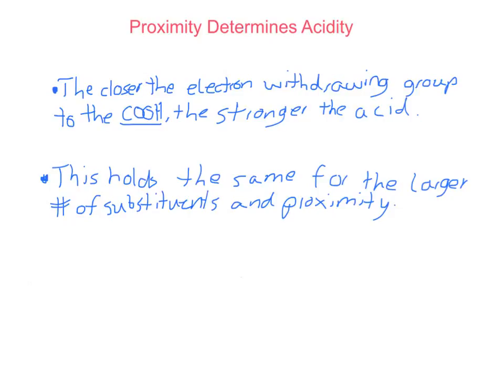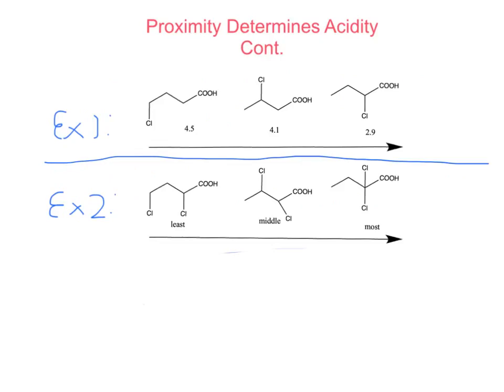When we're talking about the inductive effects in aliphatic carboxylic acids, another aspect that helps determine this is the proximity of the electron withdrawing group to the carboxylic acid. The closer the electron withdrawing group to the carboxylic acid, the stronger the acid becomes. This holds the same for the larger number of substituents and their proximity to the carboxylic acid. The first example here shows the proximity of an electron withdrawing group to the carboxylic acid. The closer the electron withdrawing group becomes, the stronger the acid becomes — when it's way out, it's only got a pKa of about 4.5, one step closer it's at 4.1, and when it's right on the carbon next to the carboxylic acid, it's at 2.9, which is a huge increase in acidity.